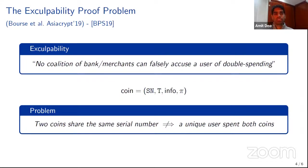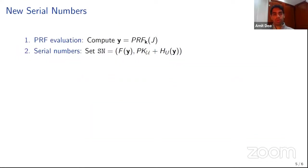Bors et al. in their AsiaCrypt 2019 paper showed that most previous offline schemes have a flaw in their security proofs for exculpability. The crux was that these proofs wrongly assumed that two coins sharing the same serial number implies a single user is behind them — i.e., a single public key underlies both coins. Bors et al. proposed a new solution, but used building blocks that aren't known to be instantiable under lattice assumptions, which led us to our work.